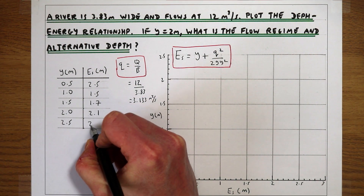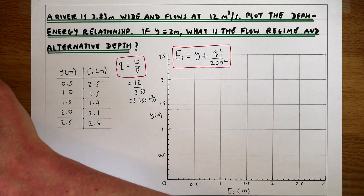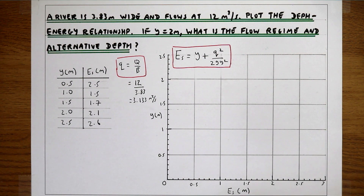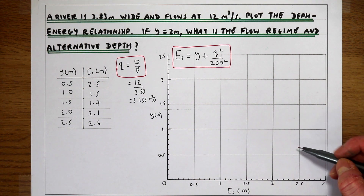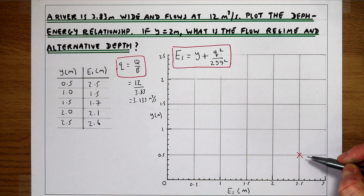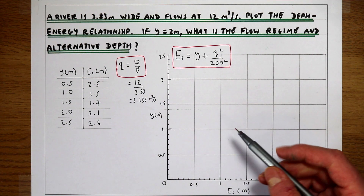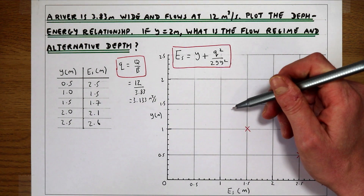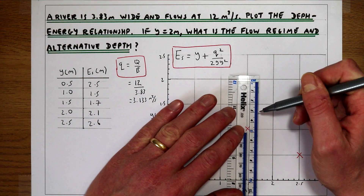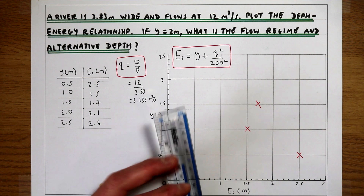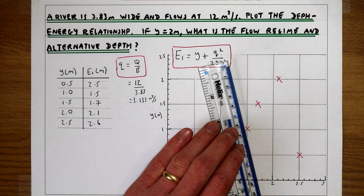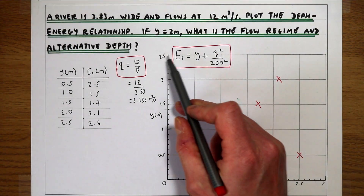Continuing the calculations: at y = 1.5, E_s = 1.7; at y = 2, E_s = 2.1; at y = 2.5, E_s = 2.6. We can now plot these values to see what the relationship looks like. I've drawn out a plot and plotted those values up.